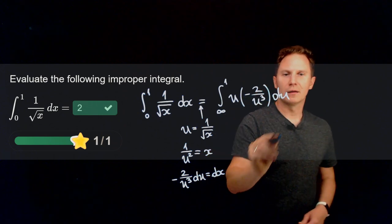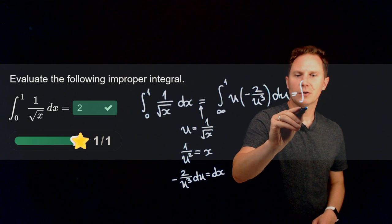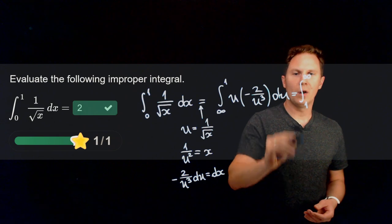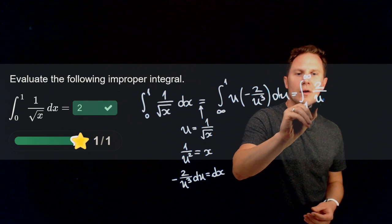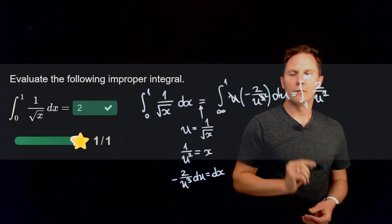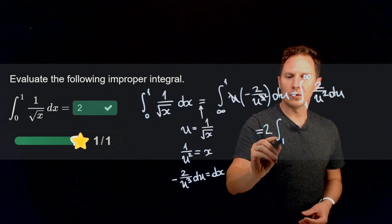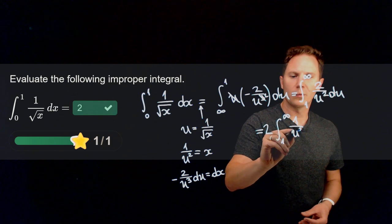Now that negative sign could be used to flip the limits of integration so that we integrate from 1 to infinity instead of from infinity to 1 of 2 over u squared, after simplifying by 1 factor of u, du. So this is simply twice the improper integral from 1 to infinity of 1 over u squared du.